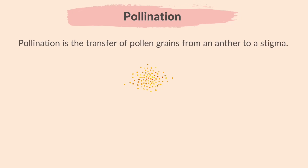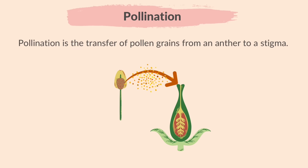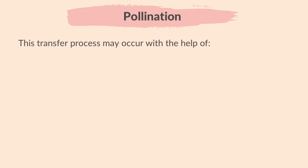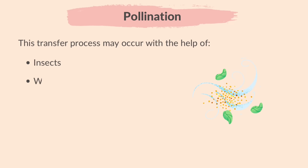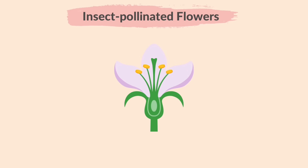Pollination is the transfer of pollen grains from an anther to a stigma. This transfer process may occur with the help of insects or wind. To adapt to their specific pollination method, insect and wind-pollinated flowers possess different structures.